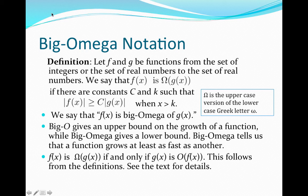We can see that this definition is very similar to our definition for Big O notation. The only difference is the inequality. We are looking at f(x) being greater than or equal to a constant multiple of g(x), instead of |f(x)| being less than or equal to a constant multiple of g(x).